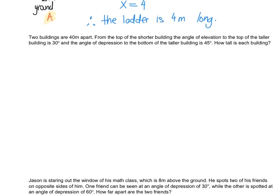Two buildings are 40 meters apart. From the top of the shorter building, the angle of elevation to the top of the taller building is 30 degrees, and the angle of depression to the bottom of the taller building is 45 degrees. How tall is each building? I know I have two buildings, so I'm going to draw the ground and then two buildings, one taller than the other. We can assume there's someone standing on top of the shorter building. We know these two buildings are 40 meters apart, and they give us an angle of elevation and depression.